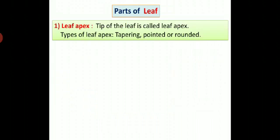Leaf apex: tip of the leaf is called leaf apex. Types of leaf apex are tapering, pointed, or rounded. You can observe such type of leaf apex in some plants around you.